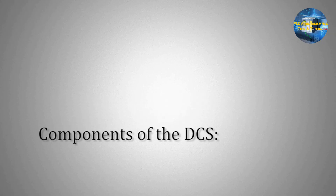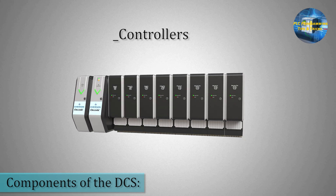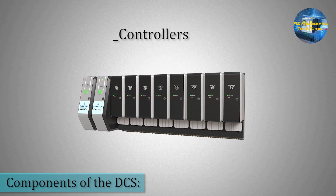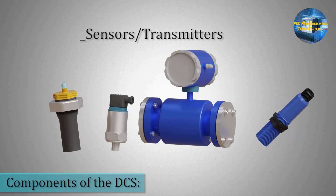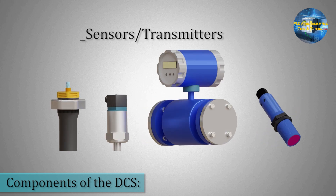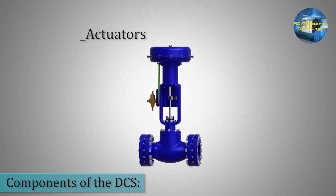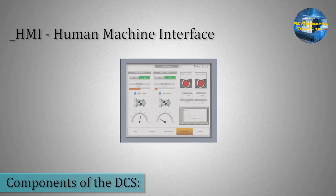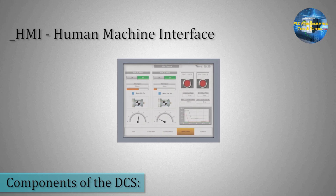Let's break down the main components of a DCS. Controllers: these are the brains of the system — they manage specific parts of the process. Sensors: these gather data from the machines, like temperature, pressure, and flow rates. Actuators: these are devices that can make things happen, like opening a valve or starting a motor. Human Machine Interface, or HMI: this is a screen where operators can see what's going on and interact with the system.